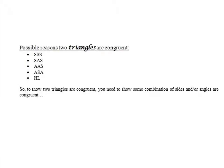In the first part of sections 4.4 and 4.5, we talked about a few postulates for proving that two triangles are congruent to each other. There were actually five total, and they were SSS, SAS, AAS, ASA, and HL. Those were all referring to some combination of angles and sides being congruent between the two triangles.